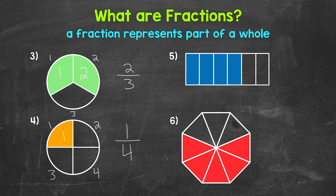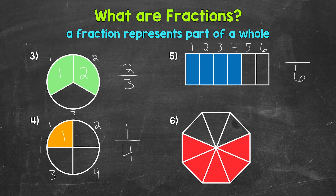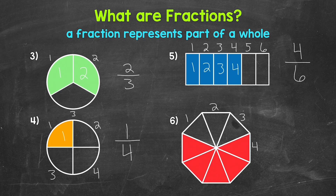Moving on to number five. How many total equal parts has the whole rectangle been divided into? One, two, three, four, five, six. So six is our denominator. Now we need how many equal parts have been shaded — one, two, three, four. So four is our numerator, giving us four over six, which we say four sixths.